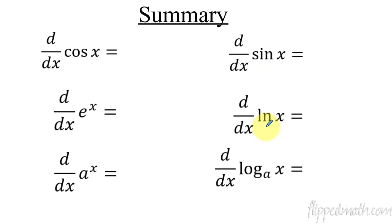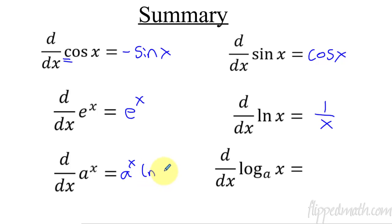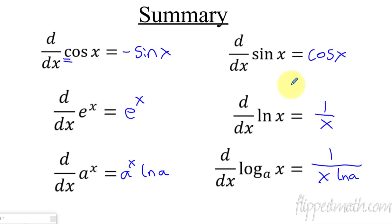Let's quickly review — this is the main point of the lesson. The derivative of cosine is negative sine. Later on, just remember: if it starts with a c, the derivative is going to be negative. The derivative of sine is cosine x. The derivative of e to the x is just itself. The derivative of natural log of x is just 1 over x. These are the main ones you'll see a ton throughout the year. Less commonly, a to the x gives you a to the x times natural log of a, and log base a of x gives 1 over x times natural log of a. All right, rock that Master Check and I'll see you in the next lesson.